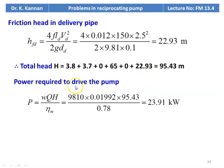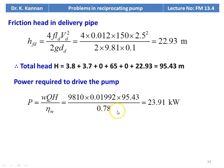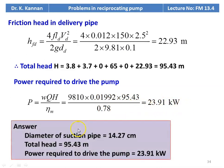Power required to drive the pump: P = W × Q × H / η_m = 9810 × 0.01992 × 95.43 / 0.78 = 23.91 kilowatt. The answers: diameter of suction pipe = 14.27 centimeter, total head = 95.43 meter, power required to drive the pump = 23.91 kilowatt.